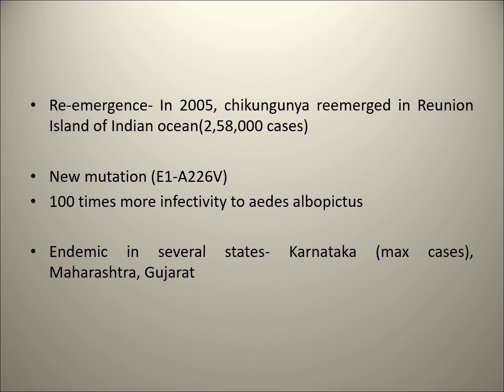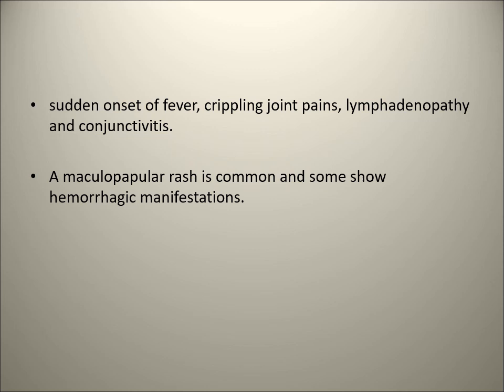Endemic activity has been seen across several Indian states - maximum cases from Karnataka, then Maharashtra, then Gujarat. In 2017 approximately 63,000 cases were reported, with Karnataka contributing about 50% of all cases. The main presentation of Chikungunya is fever, malaise, and severe joint pain.